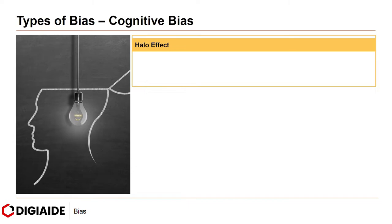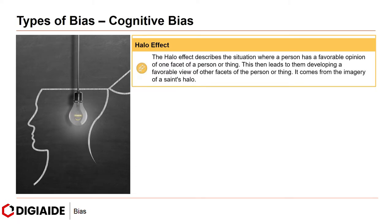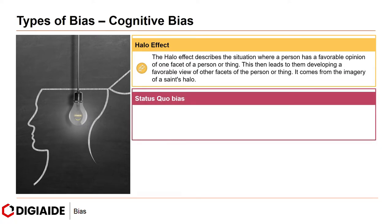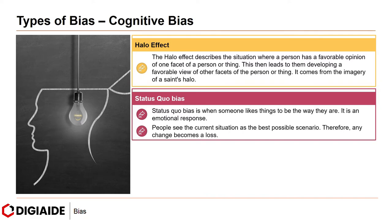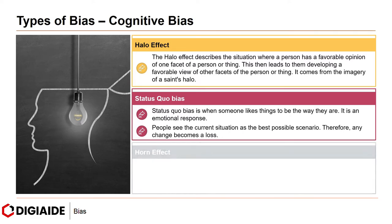Next, the halo effect. The halo effect describes situations where a person has a favorable opinion of one facet of a person or thing, which then leads them to develop a favorable view of other facets as well. It comes from the imagery of a saint's halo. Next, the status quo bias. Status quo bias is when someone likes things to remain the way they are — it is an emotional response. People see the current situation as the best possible scenario, and therefore any change becomes a loss.